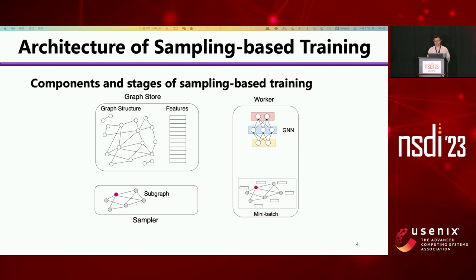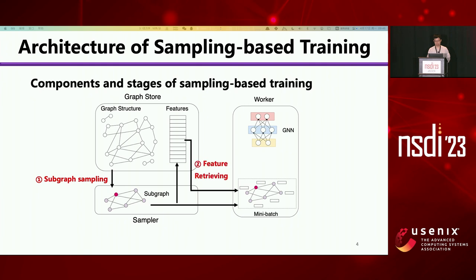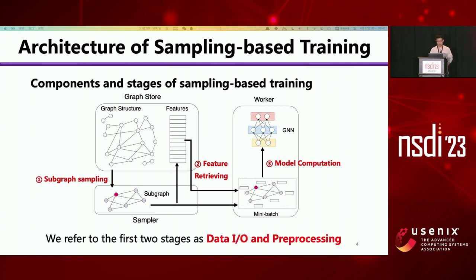Each training iteration contains three stages. The first stage is subgraph sampling, where samplers sample a subgraph from the original graph and send it to the worker. The second stage is feature retrieving, where the worker retrieves node features and places them on GPU. The third stage is model computation, where the worker trains the GNN model on GPU with forward and backward computation. We refer to the first two stages as data IO and pre-processing.